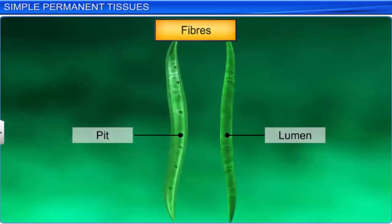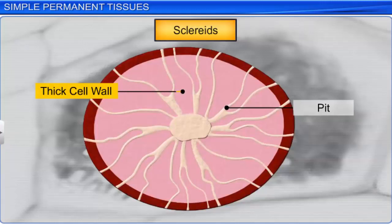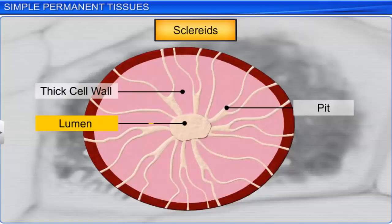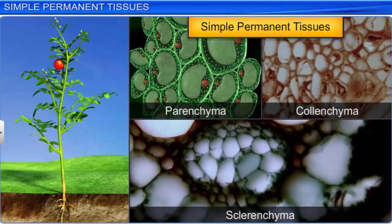Scleroids are short and thick-walled cells, generally spherical, oval, or cylindrical in shape. They are extremely lignified and have narrow cavities or lumen. They occur in the hard covering of seeds, the shells of nuts, and the pulp of fruits like guava and pear. Simple permanent tissues are very essential, as they provide protection, storage, support, and strength to the plant.